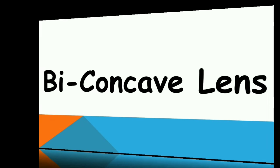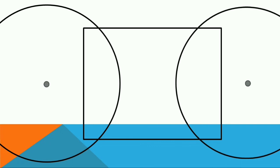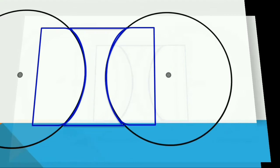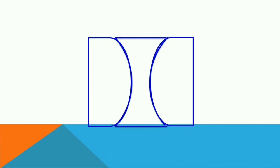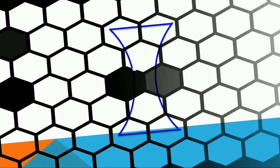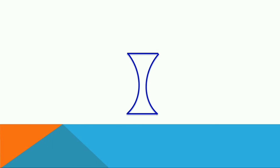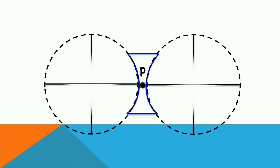Now, biconcave lens preparation. We spot two points and draw circles, then move the circles apart slightly. Mark the resulting shape, cut along the marked outline, and remove the remaining pieces. The remaining shape is called a biconcave lens. From the left side, surface one is on the left and surface two is on the right. This concave lens also has a midpoint called the pole, and the two surfaces are parts of spheres which also contain centers of curvature.